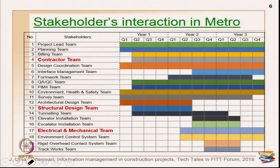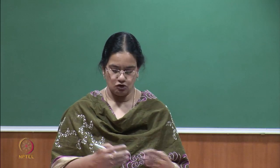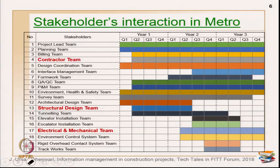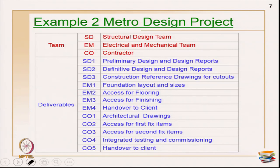Let us see the other case, which is a metro construction example. This metro design example was introduced to show the complex information exchange between different teams — in any project you may have so many teams with complex interactions. For this example, 20 teams were taken over a span of three years with close interaction between all the teams. The three teams I am going to take for today's class to explain the BDM representation will be the contractor team, structural design team, and electrical and mechanical team.